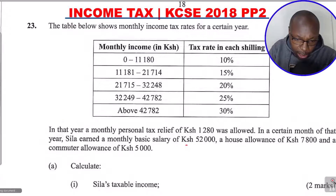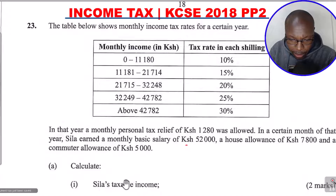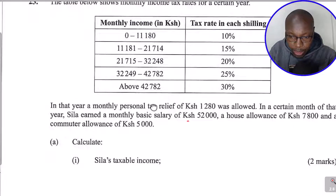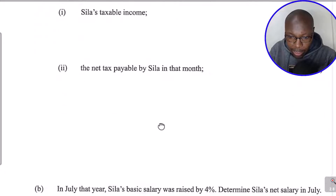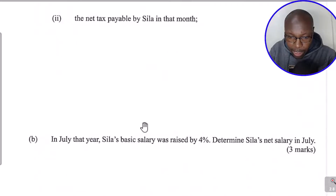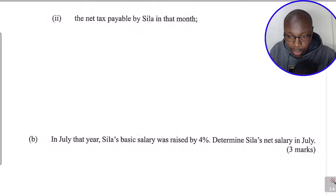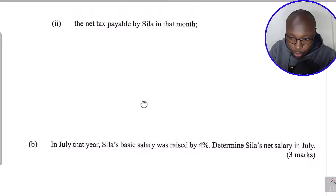The questions ask us to calculate: Part 1 — Sila's taxable income; Part 2 — the net tax payable by Sila in that month. Then Part B: in July that year, Sila's basic salary was raised by 4%. Determine Sila's net salary in July.